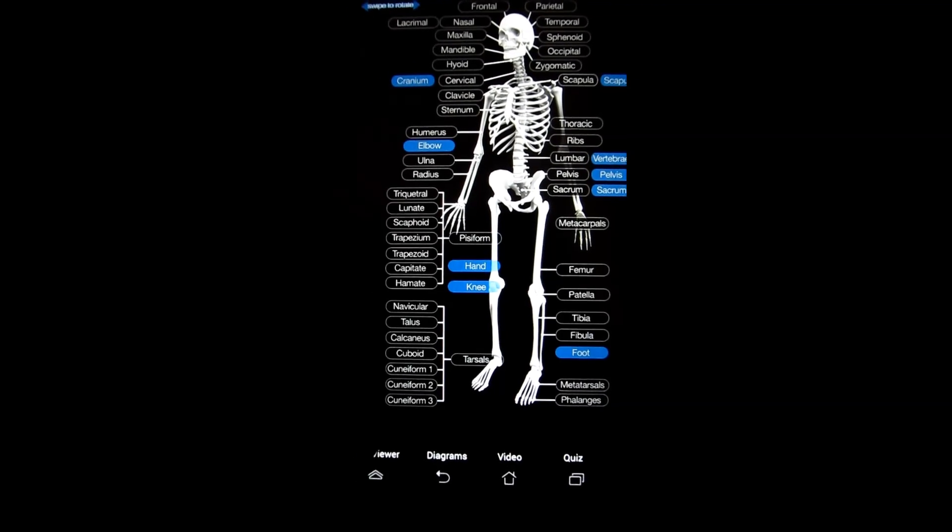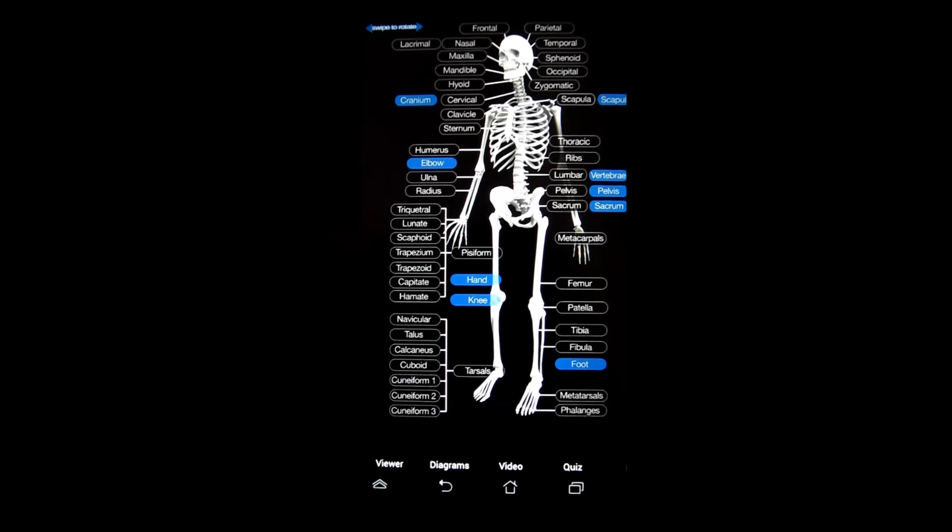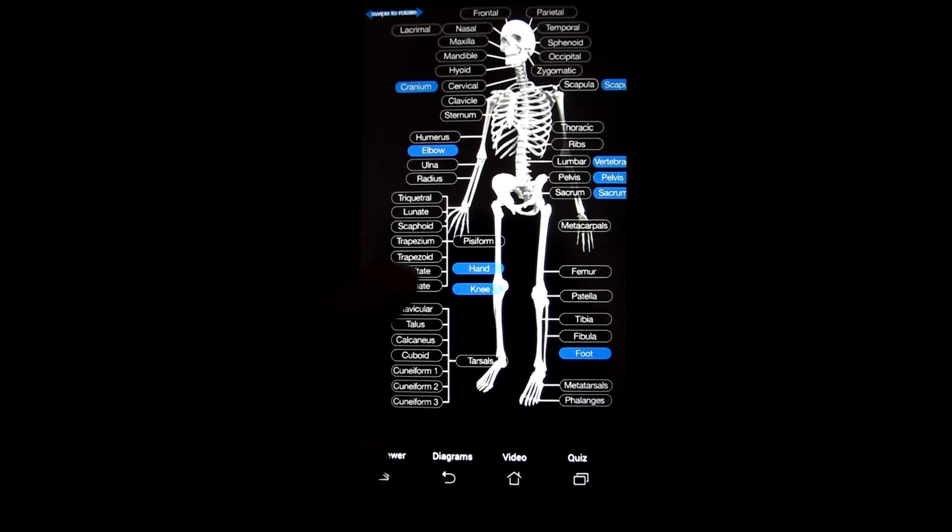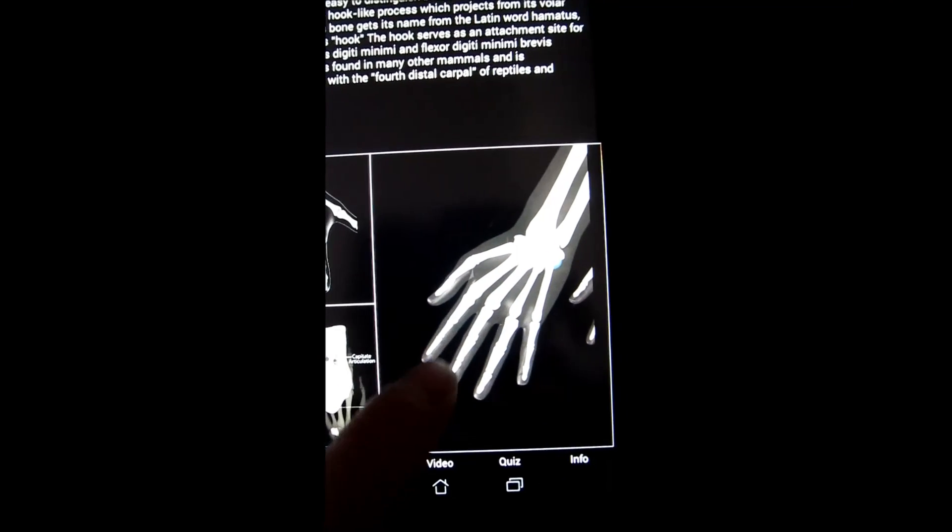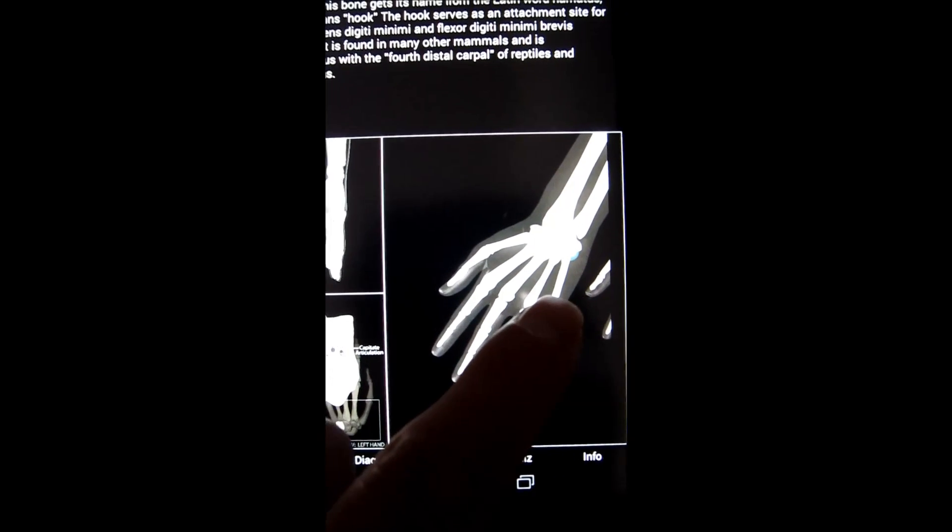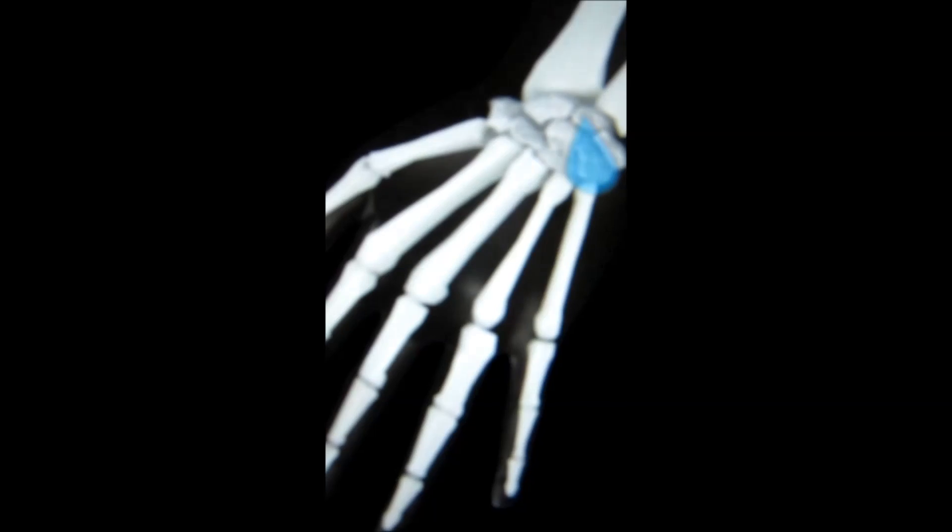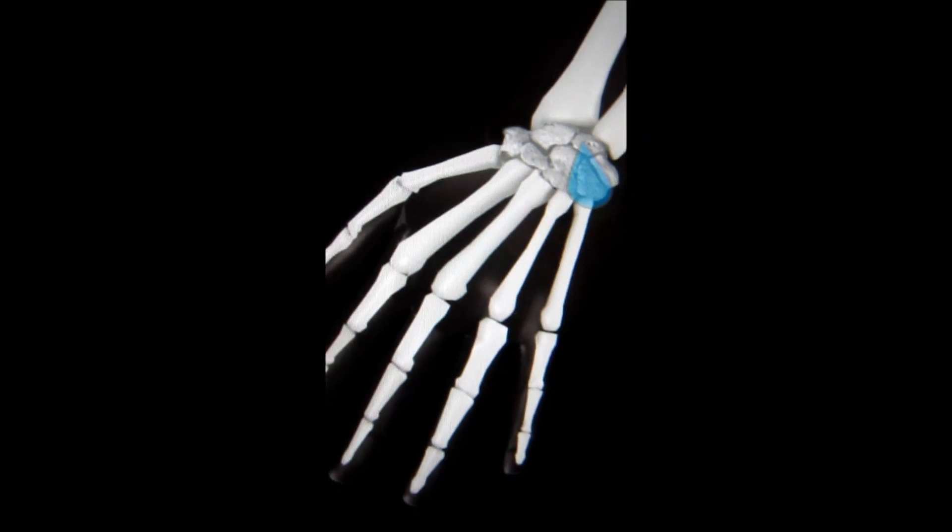Impressively on the hand they have all the bones in the hand. Triketral, lunate, scaphaloid, trapezium, trapezoid, capitate, hamate. Let's have to take a look at some of those. She got them nice and labeled here where each one is. It can be kind of difficult to memorize some of those but Skeleton 3D has got you covered.